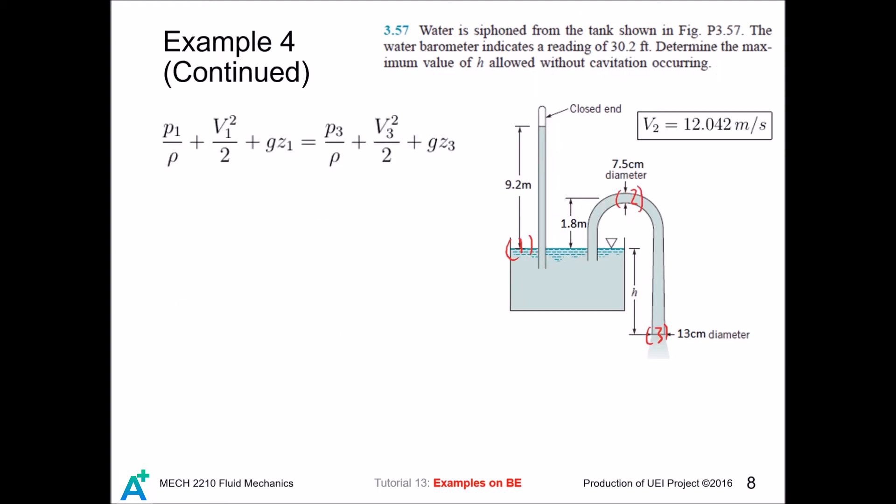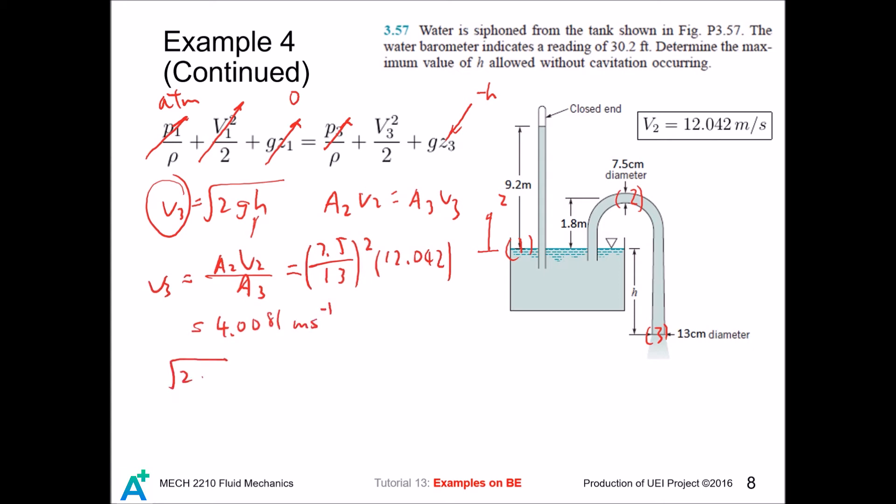Now we look at point 1 and point 3. Point 1 and point 3 here have the same pressure, and that is the atmospheric pressure. So both go away. We have already taken v1 equals 0 and we set z1 as the datum, so this goes 0. Point 3 is h below point 1, so it is negative h. So we can also solve for v3. But we must know v3 to solve for h. So how can we obtain v3? We must again use the continuity equation. Then we solve for v3 and we are done with this example.